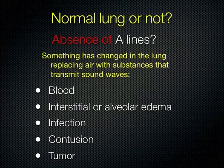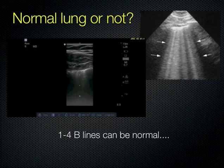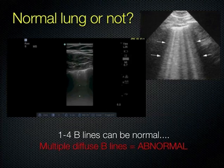Now, what are B-lines? B-lines are vertical artifacts that erase the A-lines. A normal aerated lung has A-lines, but if you have B-lines, these are artifacts created by fluid in the lung that will obliterate the A-lines. Normally these vertical comet tails — you can have a couple small ones that are normal, up to three or four. But multiple diffuse B-lines in multiple fields is abnormal — that is fluid that has overtaken the air in the lung. The fluid is next to air in the lung and creates a reverberation, but the reverberation in that case is vertical.